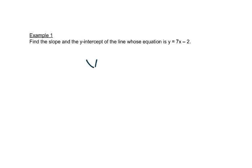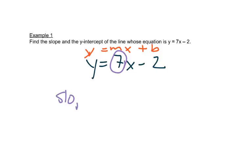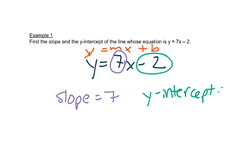So if we look at this: y equals 7x minus 2. Let's write above it the form y equals mx plus b. So the number in front of x is our m, or our slope. So our slope here is 7, and this number on the end by itself is the y-intercept. So the y-intercept here is negative 2.